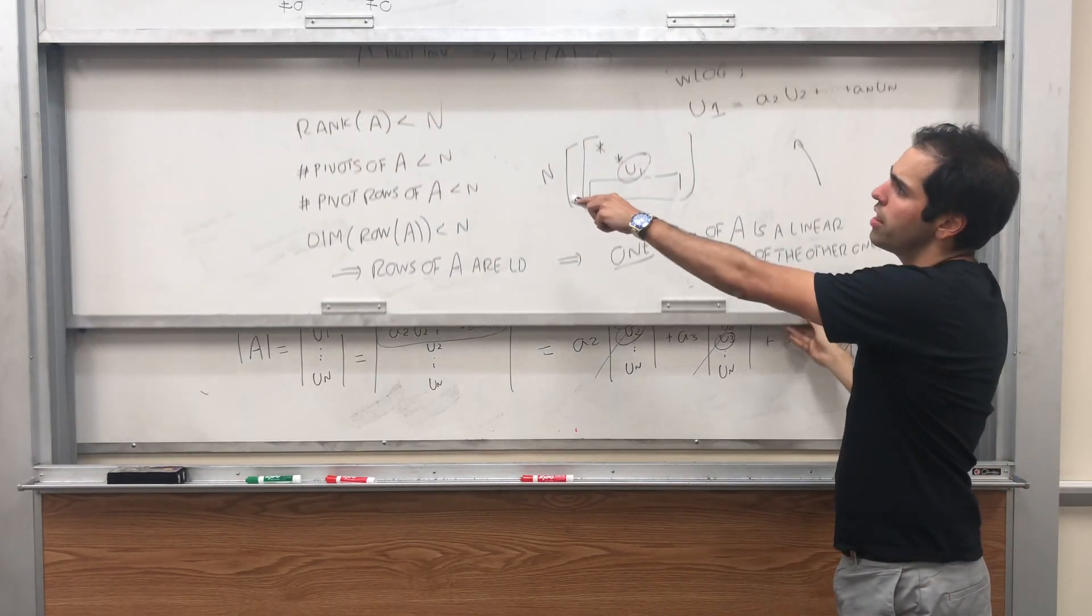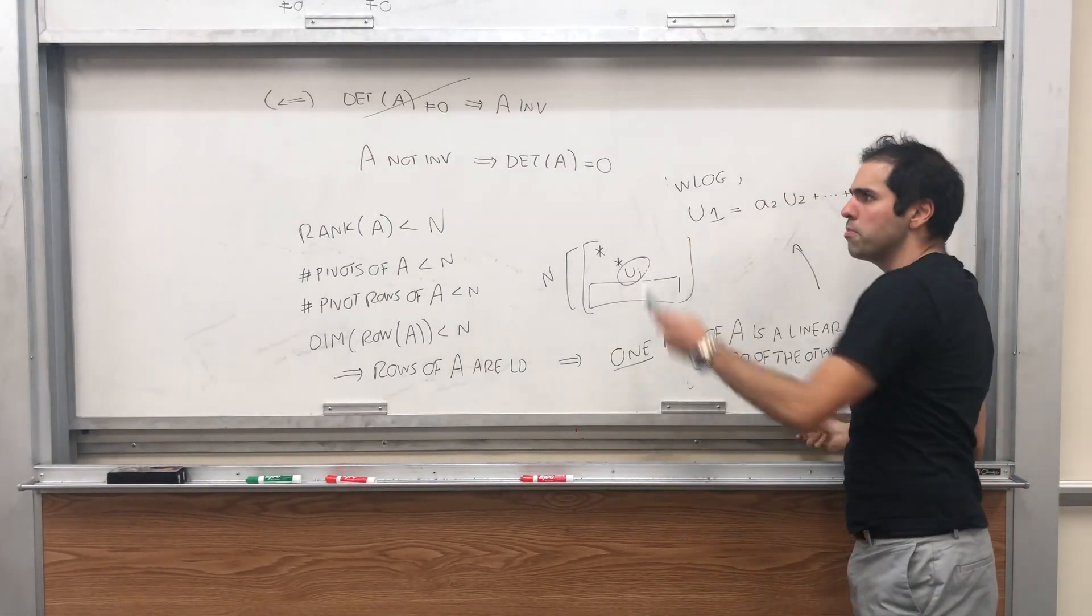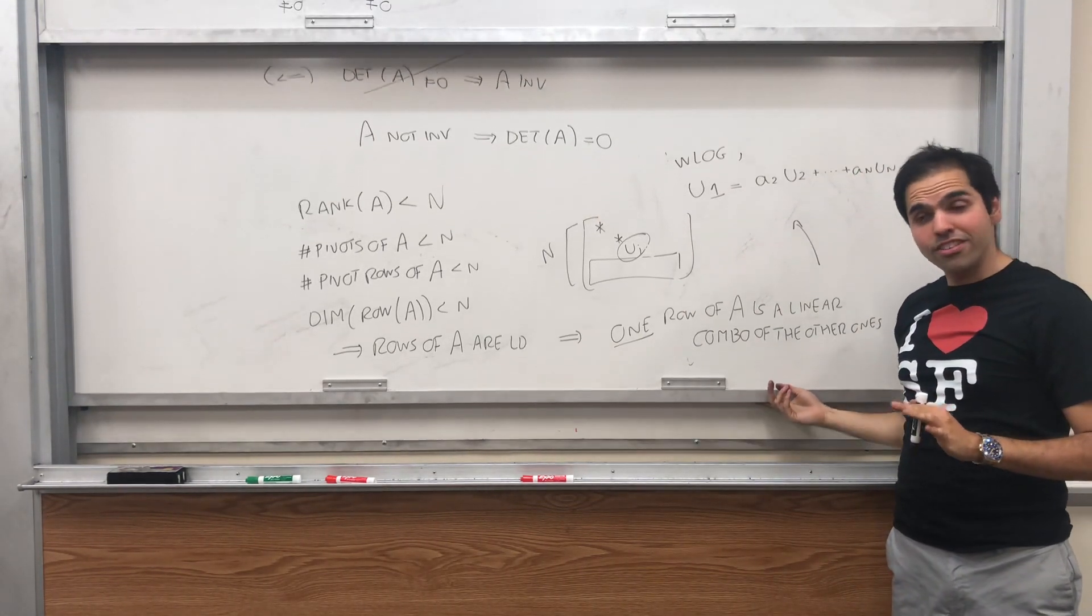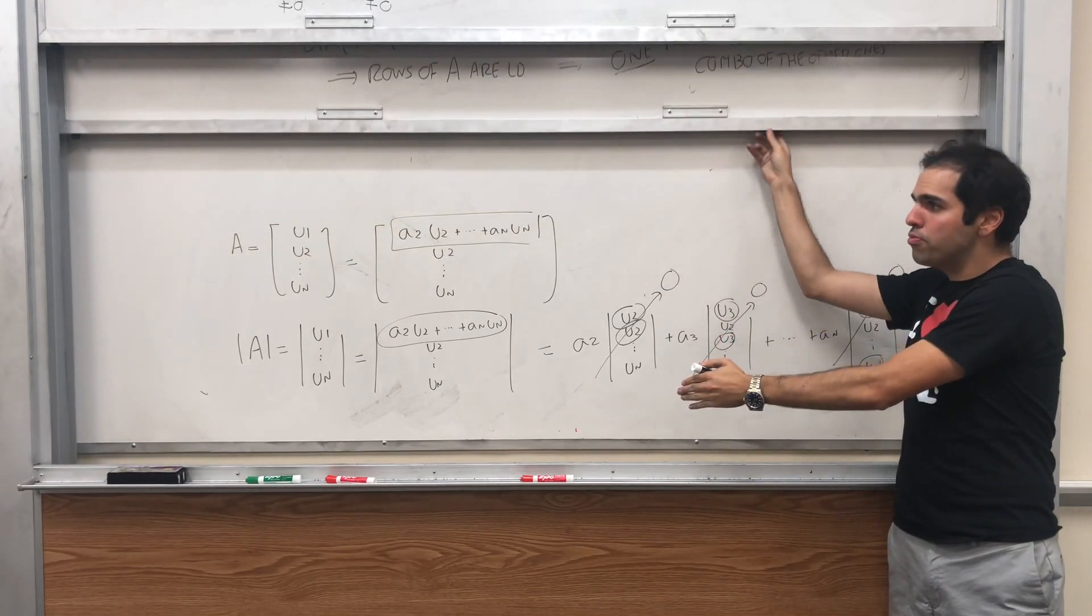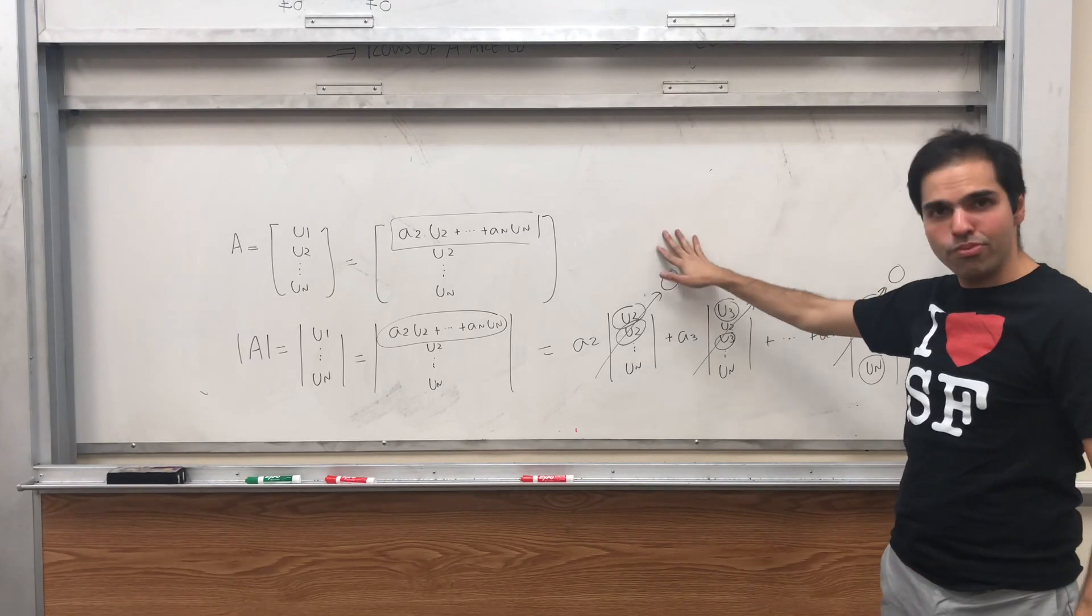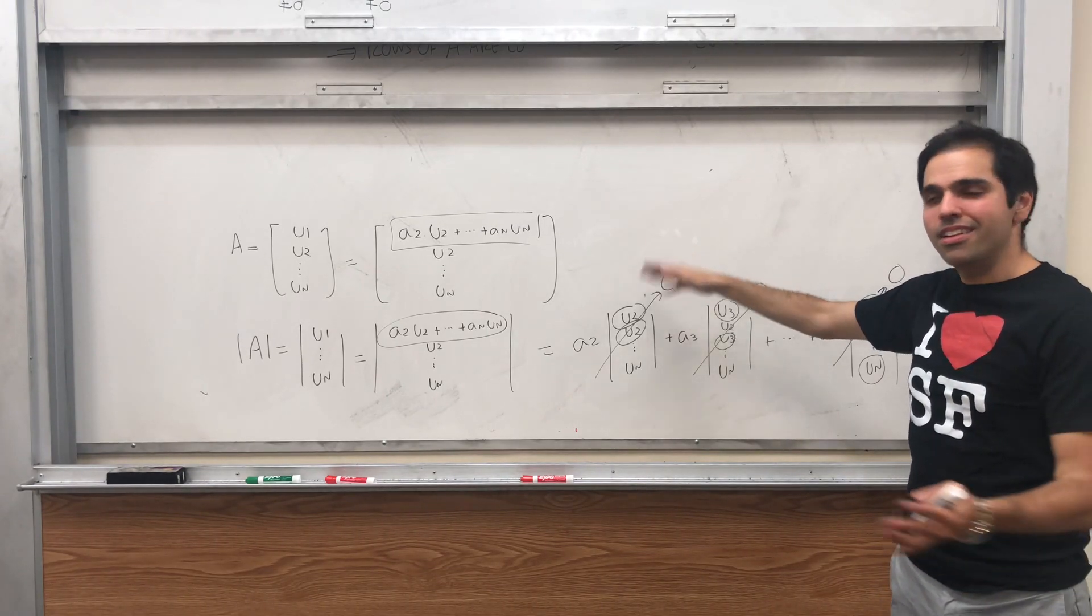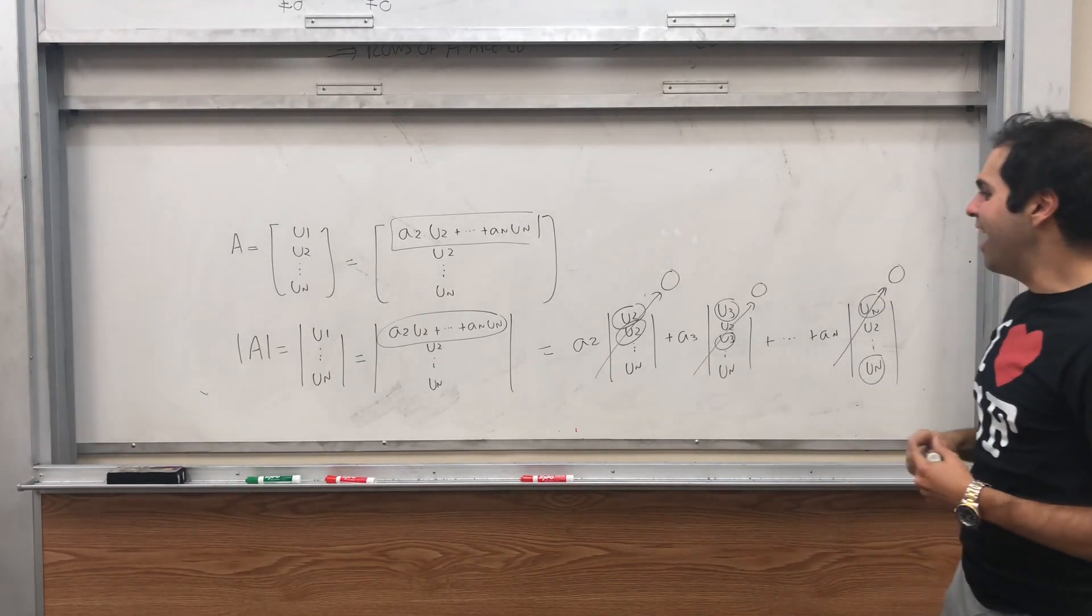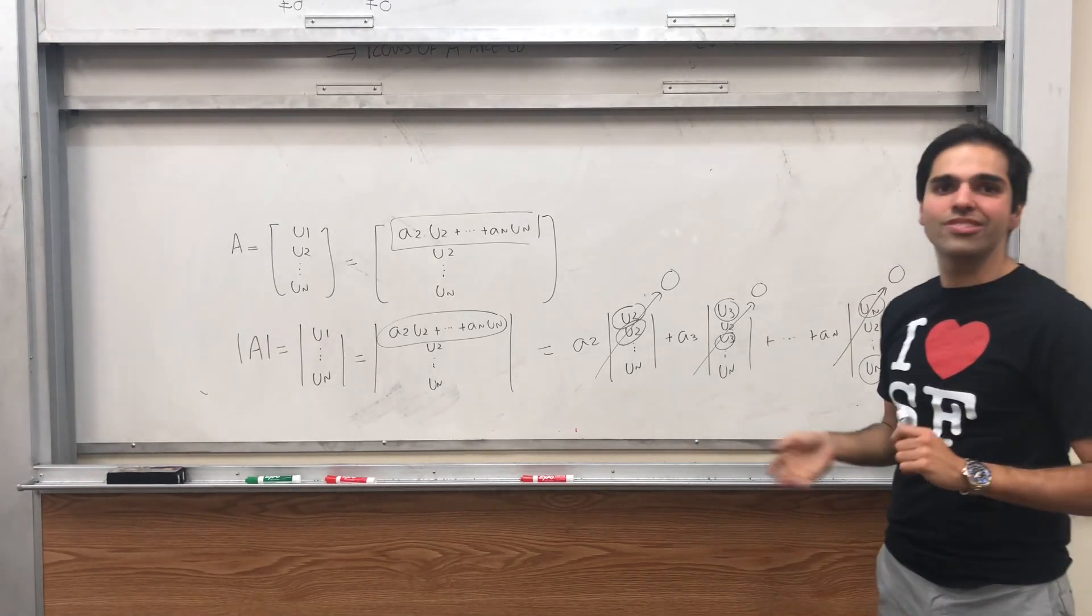Then by using multilinearity, you end up getting that the determinant of A is zero. And therefore, it is true that if A is not invertible, the determinant is zero. And I would like to emphasize, in this part of the proof, we didn't use any multiplicativity or anything. So this proof is independent of the multiplicative fact, which means we don't do any circular reasoning.